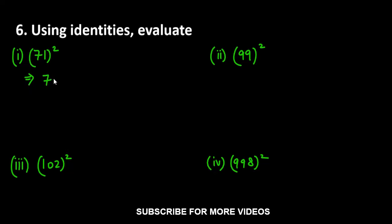We have 71. How can you break the 71? It can be written as 70 plus 1 whole square. You can see here there are two numbers with a plus sign between them. This means we apply a plus b whole square.